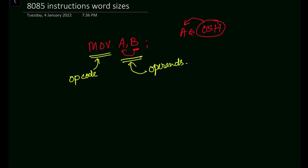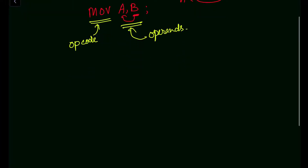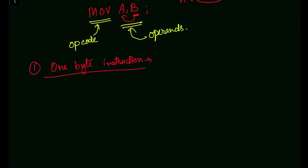Now that we understand opcodes and operands, let us classify instructions depending on word sizes. There are basically three types: one-byte instructions, two-byte instructions, and three-byte instructions. In a one-byte instruction, the opcode and the operand are represented by one byte only. Let us take MOV A, B as our first example — this is a one-byte instruction.